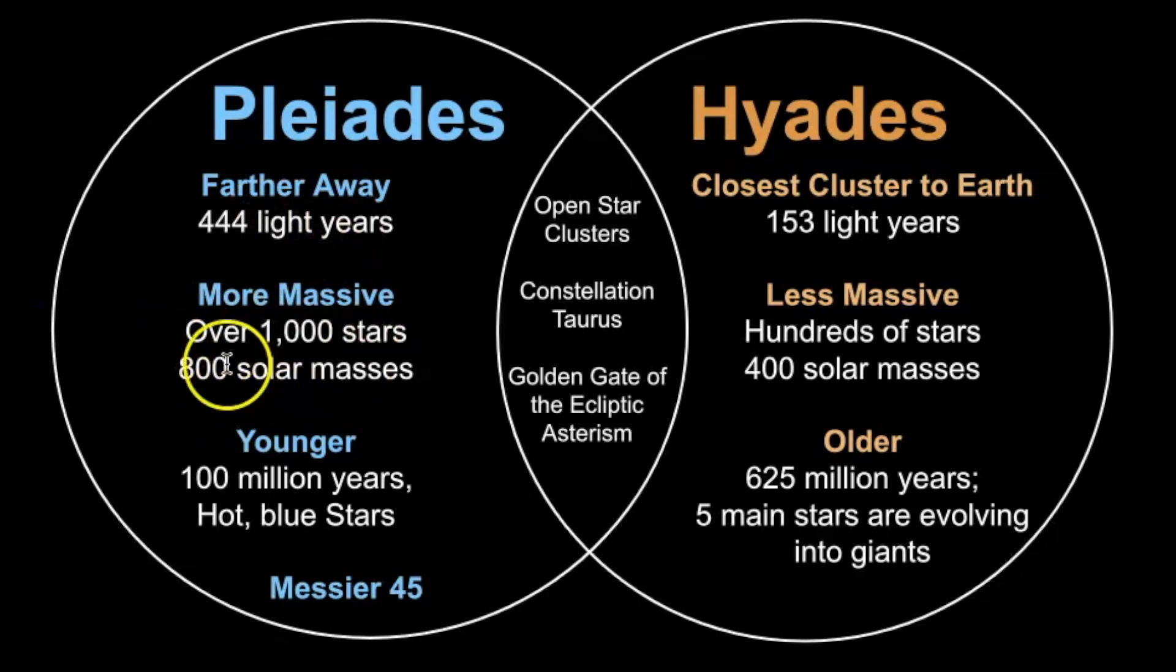The Pleiades is also more massive and the Hyades is about half the mass of what the Pleiades would be, and the Pleiades is younger. It has hot blue stars and it's estimated to be 100 million years old, where in terms of its age for the Hyades it's much older. Five of the main stars are evolving into giant stars. That's why we see that variety of color, and then the Pleiades is also known as Messier 45 where the Hyades does not have a Messier designation.